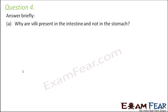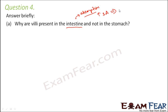Why are villi present in the intestine and not in the stomach? Because the intestine is involved in the process of absorption, and for absorption, the greater the surface area, the better the absorption. The presence of villi increases the effective surface area. That is why the intestine has villi but the stomach does not, because the stomach is not involved in absorption.